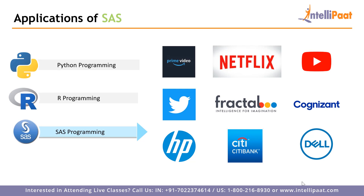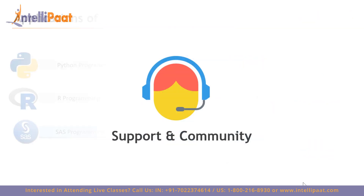For SAS programming, companies such as Amazon, Netflix, YouTube, Twitter, Fractal, Cognizant, HP, Citibank, Dell, Google, and Tesla — among various other Fortune 500 companies — use SAS for their business analytics. There are very few companies that use SAS for business intelligence tasks, as not all companies can afford SAS programming since it is a very expensive tool.